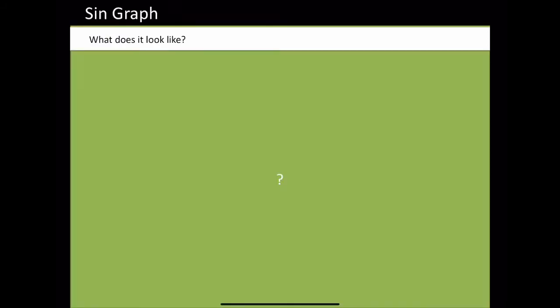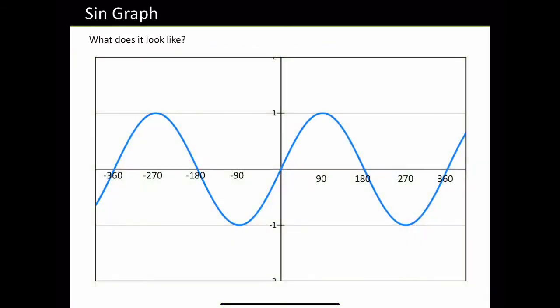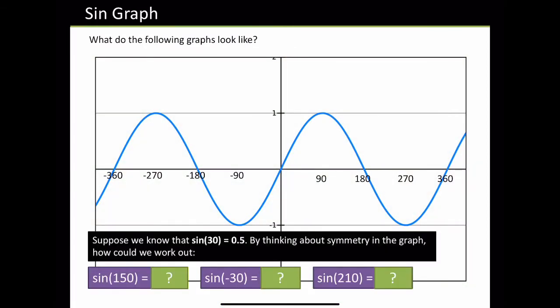So first of all, what does the sin graph actually look like? So this is something that you did yesterday. You should already know off the top of your head — does it start at 1 or does it start at 0? Well, the sin graph actually starts at 0. So it starts at 0, it looks like an S, and you can actually see here it repeats every 360 degrees.